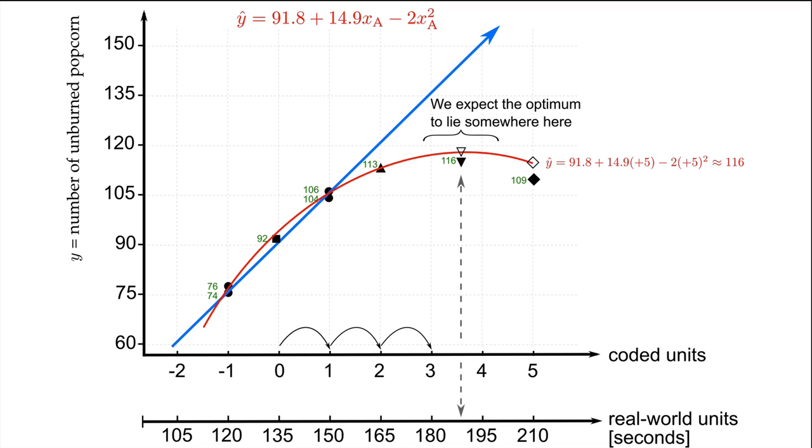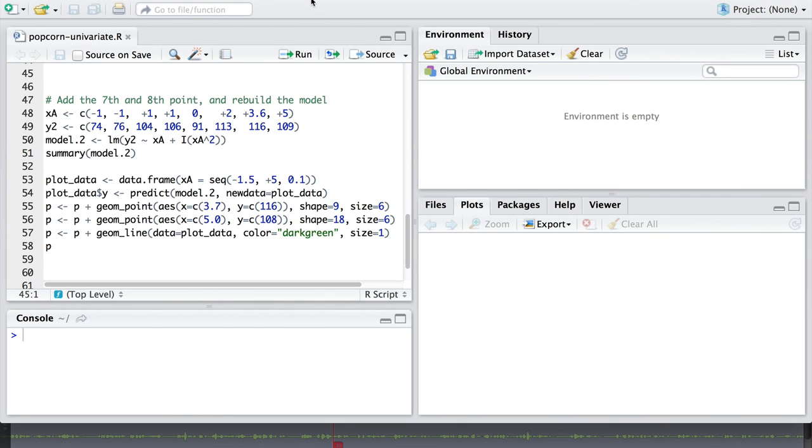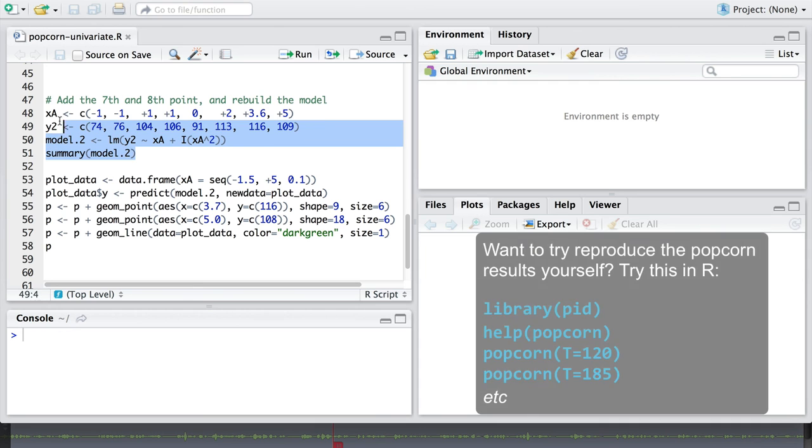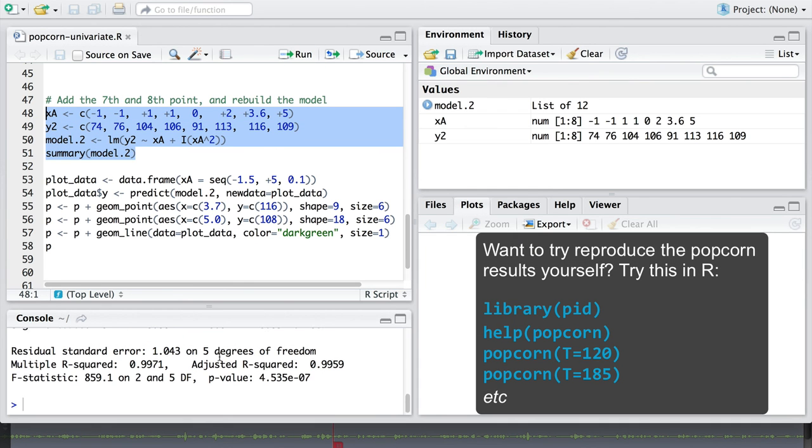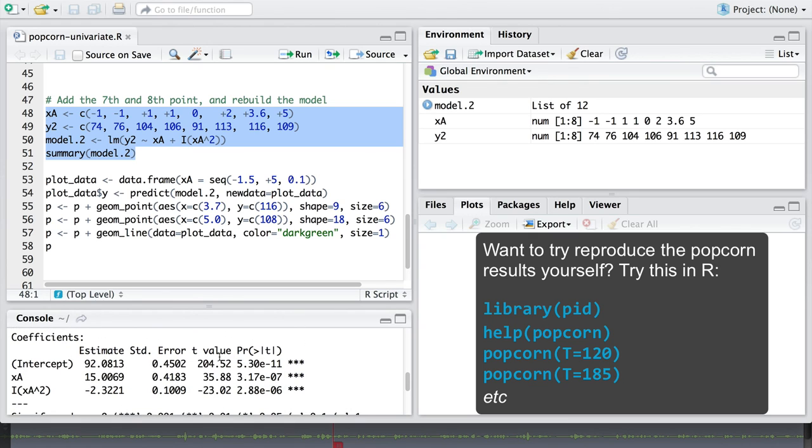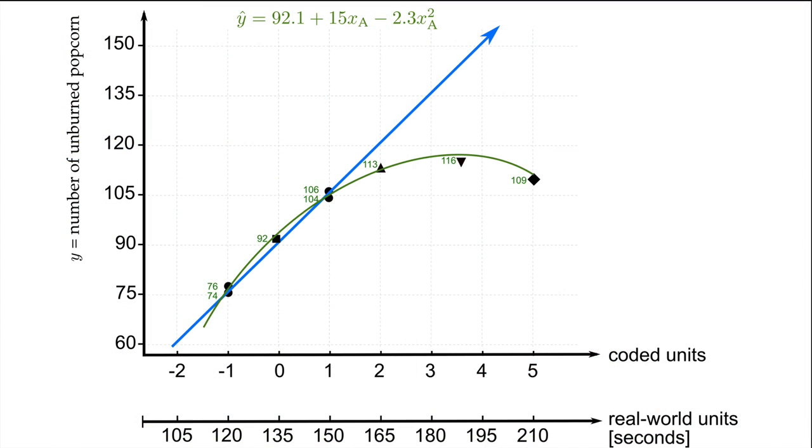Again, this was a great demonstration that the model was useful, but has some inaccuracy. We predicted 116, but our actual value was 109. Since we have this eighth data point, we might as well use it to improve our model. And here is the revised R code for that. So there we are. The updated model is 92 plus 15 times xA minus 2.3 times xA squared. And you will notice the location of the optimum has shifted just slightly. It's not so bad that we have to go relocate it. The revised model is shown in dark green.